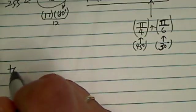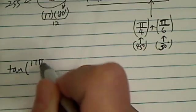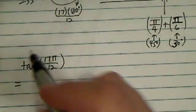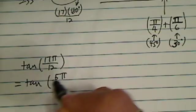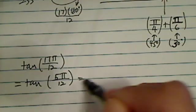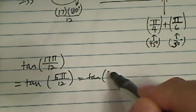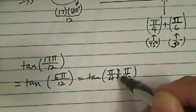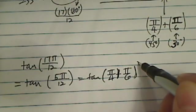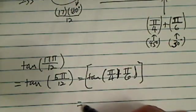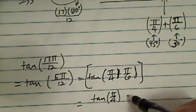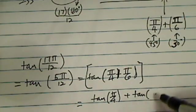So 17 pi over 12 is really equal to tangent of what we said earlier, 5 pi over 12, which is also equal to tangent of pi over 4 plus pi over 6. From here, all we have to do is substitute into the original formula.